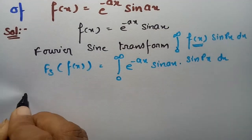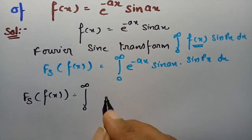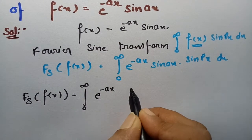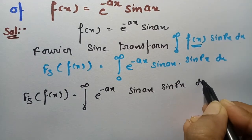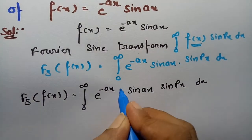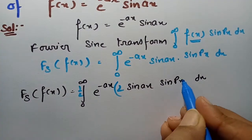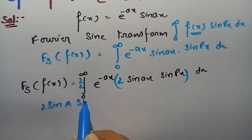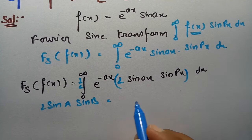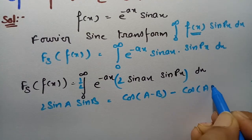So the Fourier sine transform of f(x) is the integral from 0 to infinity of e^(-ax) · sin(ax) · sin(px) dx. Now I am going to multiply and divide by 2, using the formula: 2·sin(a)·sin(b) = cos(a - b) - cos(a + b).